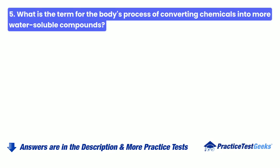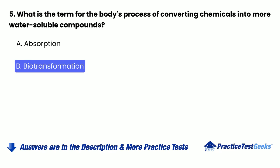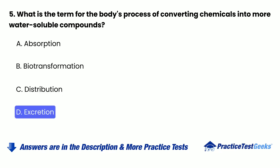Question 5: What is the term for the body's process of converting chemicals into more water-soluble compounds? A. Absorption. B. Biotransformation. C. Distribution. D. Excretion.